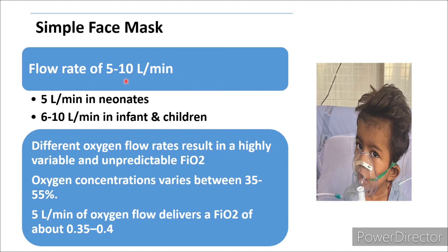For the simple face mask, the flow rate should be set between 5 to 10 liters per minute. Generally, a simple face mask is not used in neonates, but if used for nebulization or any other purpose, 5 liters per minute should be set. For infants and children, 6 to 10 liters per minute is used. Different oxygen flow rates result in highly variable and unpredictable FiO2 delivered to the patient.